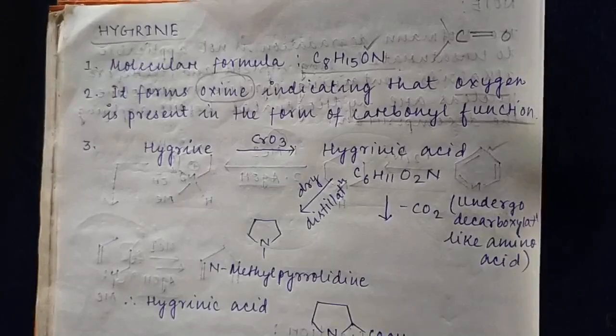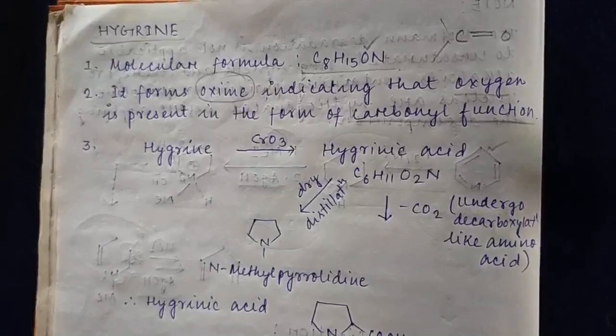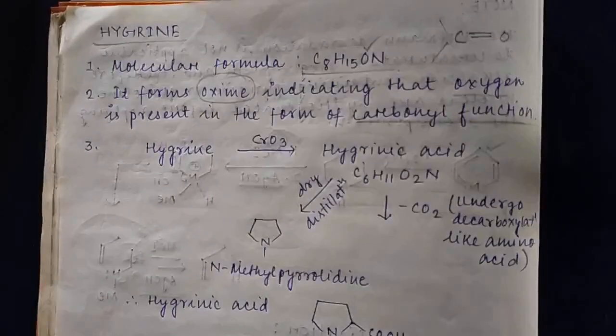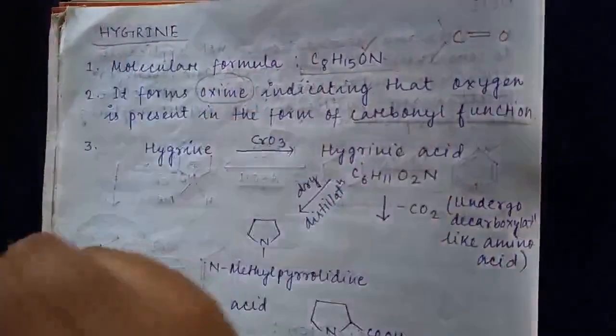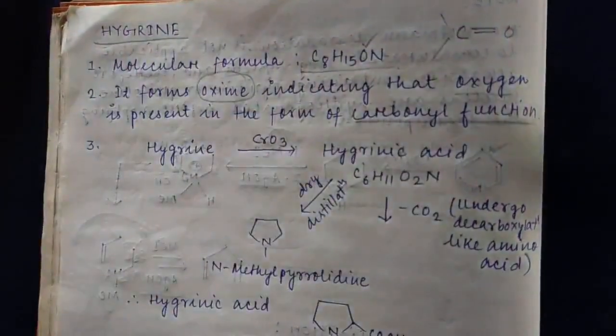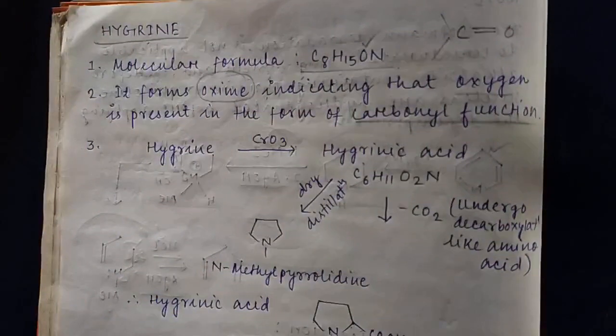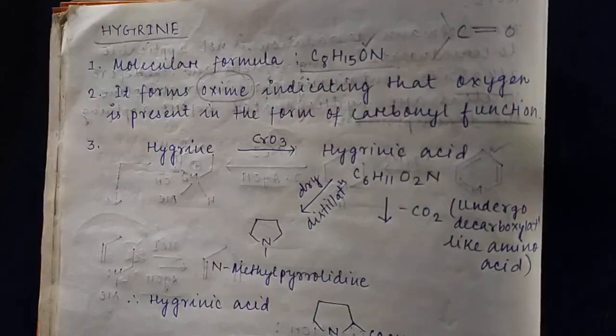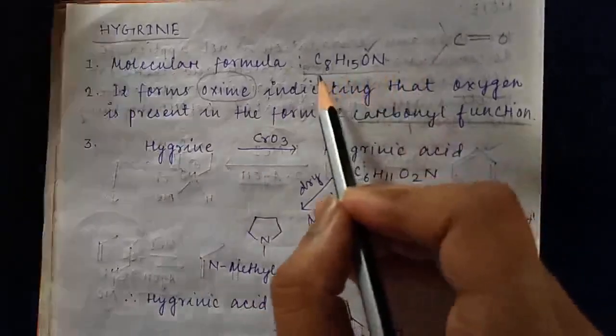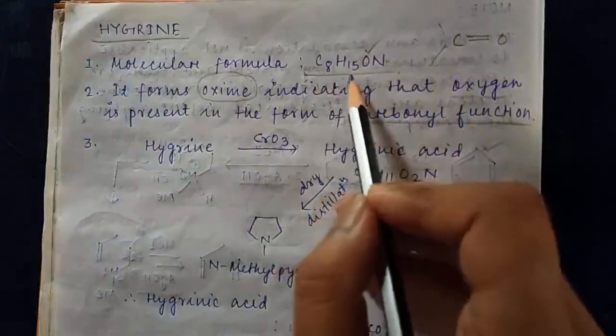Hello guys, today we are going to discuss a very important topic from alkaloid chemistry: hygrine. Hygrine is a very important alkaloid, so in this class we will learn how the structure of hygrine is elucidated. First of all, let us see the molecular formula. The molecular formula of hygrine is C8H15ON.